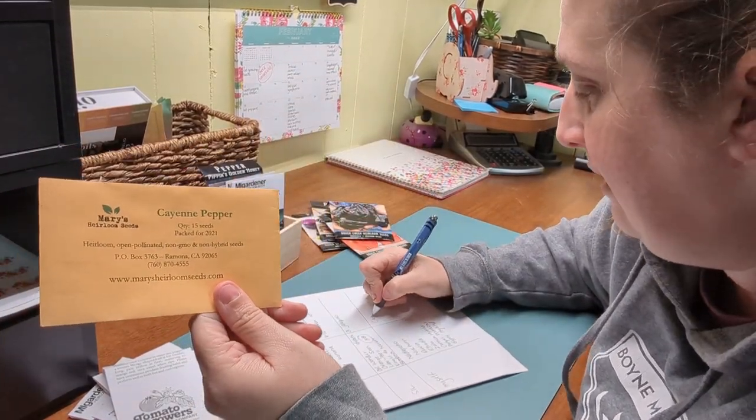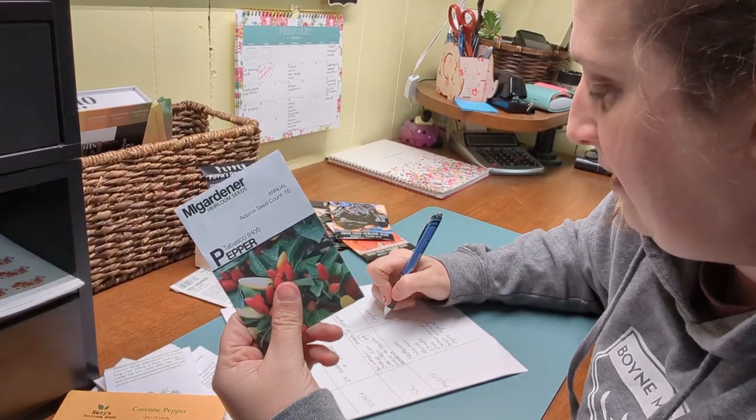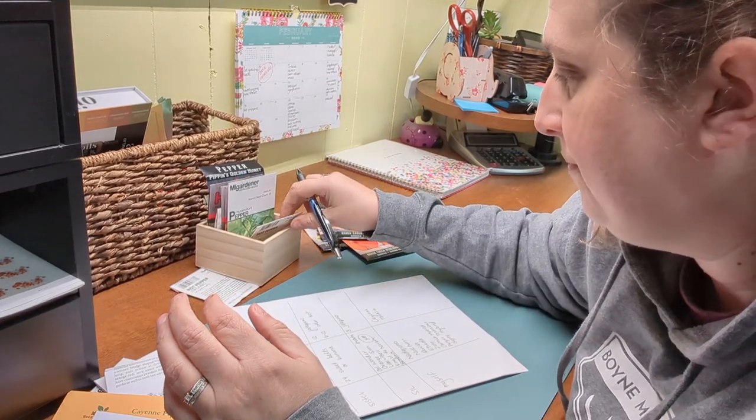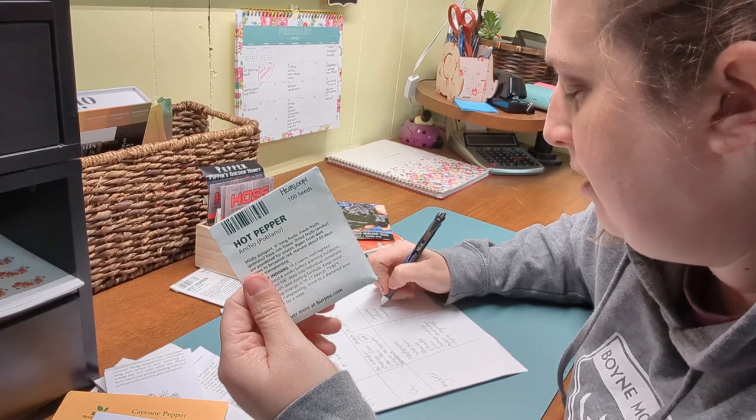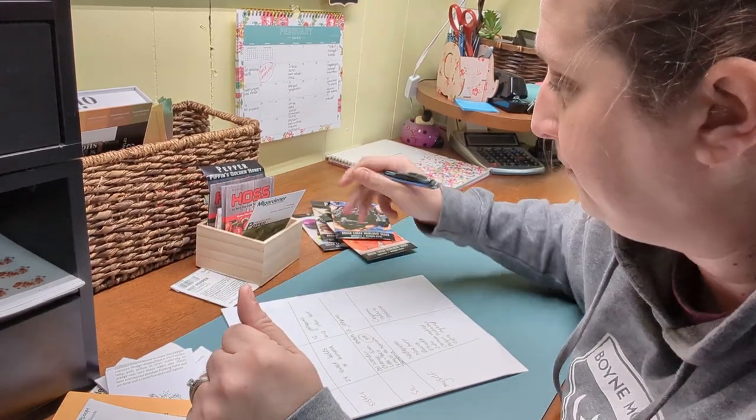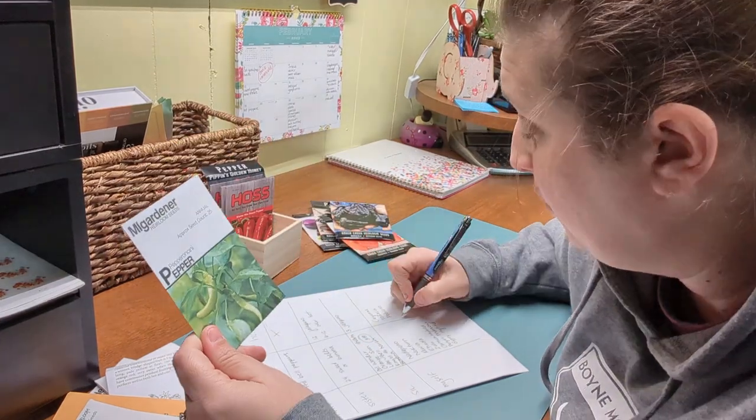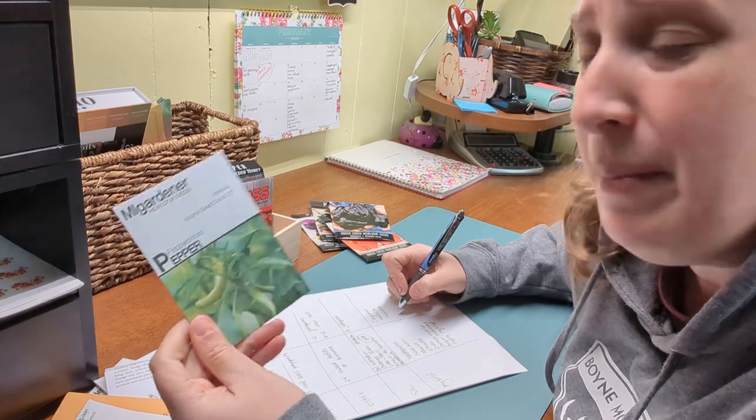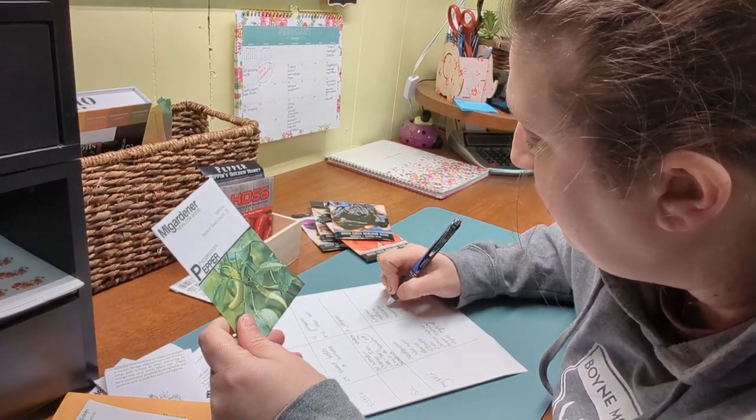I'm going to do cayennes to make cayenne powder. Tabasco's for hot sauce. Poblanos, which I'll use in chili powder. I'm going to try pepperoncinis this year. I've never done them before. My husband likes them. So we're going to kind of see what we think. I'm probably going to try and pickle them. Pepperoncinis.